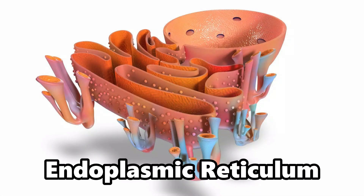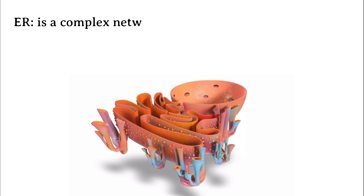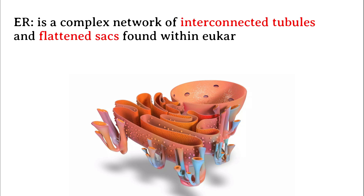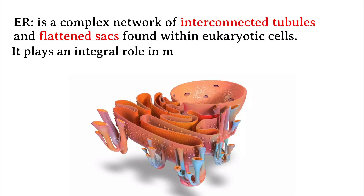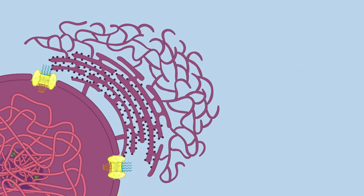The endoplasmic reticulum, often abbreviated as ER, is a complex network of interconnected tubules and flattened sacs found within eukaryotic cells. It plays an integral role in multiple essential cellular processes, making it a vital component of life as we know it. It acts as a transportation system and a manufacturing plant within the cell.